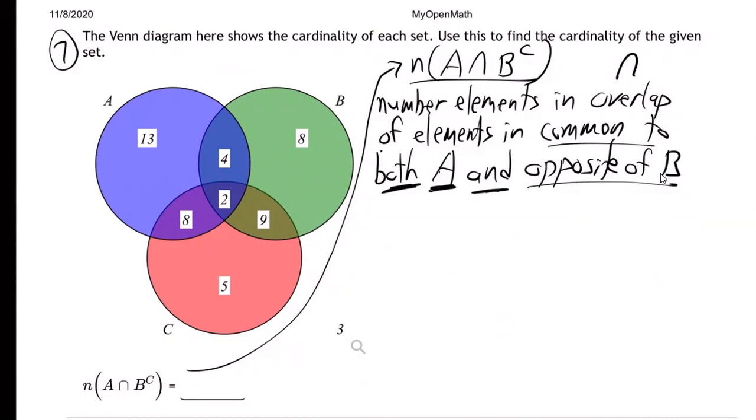Well, maybe it'd be helpful to find those that are in the opposite of B. So opposite, I'll say outside of B. So that would be the 13, the 8, and the 5. Those are the ones that are outside of B, that are the complement of B. That's B complement.